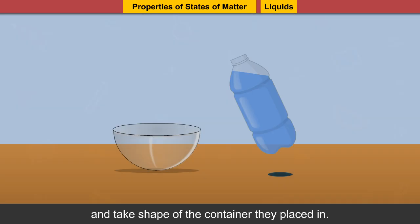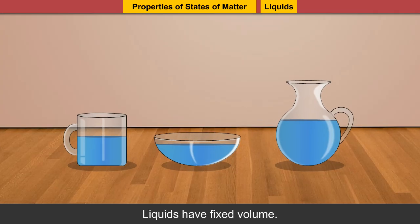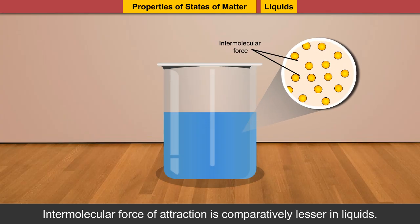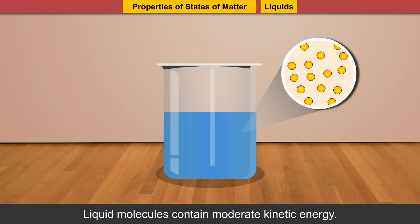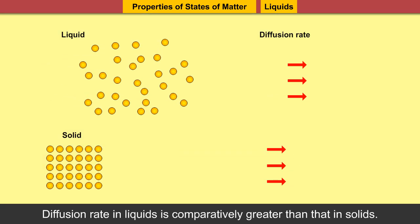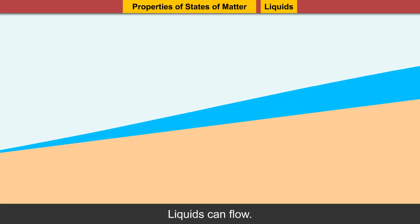Liquids do not have a definite shape and take the shape of the container they are placed in. Liquids have a fixed volume. Liquids are slightly compressible in nature. Intermolecular force of attraction is comparatively lesser in liquids. Intermolecular space is comparatively more in liquids. Liquid molecules contain moderate kinetic energy. Diffusion rate in liquids is comparatively greater than that in solids. Liquids can flow.